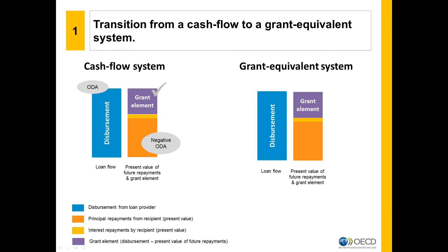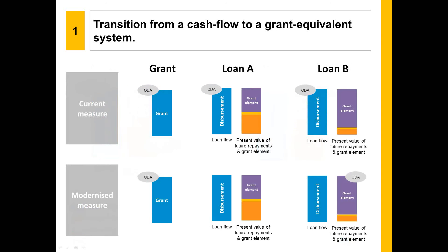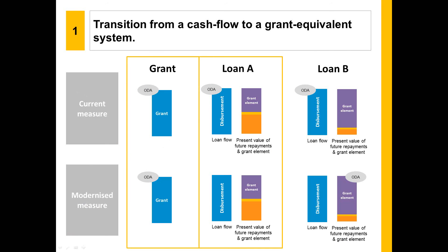In a grant equivalent system, when a loan meets the minimum concessionality threshold, only the grant element of the loan is included in ODA. This allows for a real comparison between grants and loans, as only the grant portion of the loan is included in ODA.